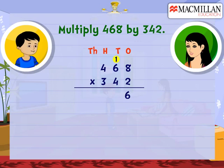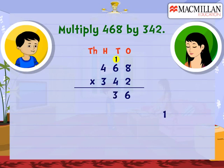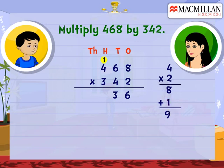Then we multiply 6 by 2, so we get 12 plus 1 which was a carry, so we get 13. Now we put 3 below 6 and 4, and take 1 carry. That means in the next step we multiply 4 by 2, then we get 8 plus 1 carry, so we get 9. Yes, exactly.